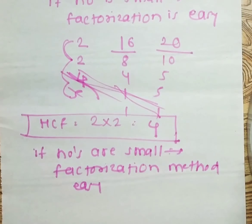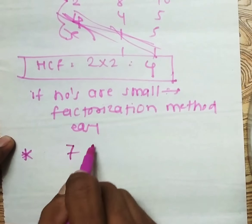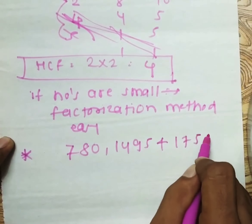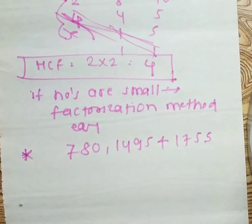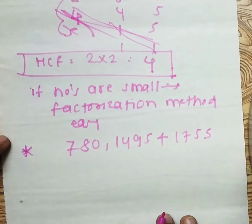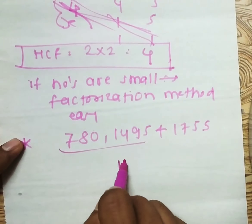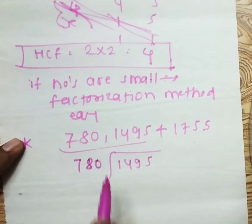But if the numbers are large, what do we do? For example, if someone asks you to calculate the HCF of 780, 1495, and 1755, it is quite difficult to factorize all these numbers — the procedure will be lengthy. The simple method for large numbers is the division method.